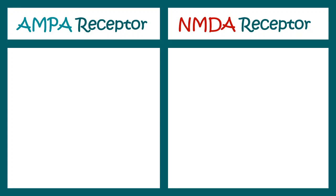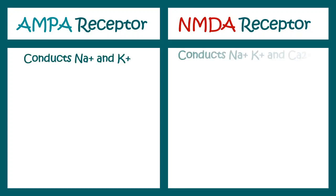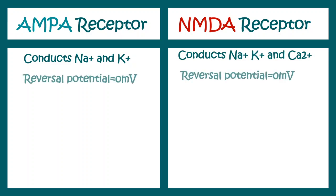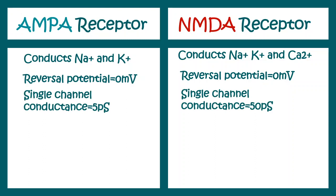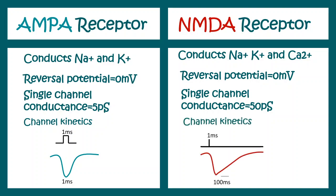Comparing AMPA and NMDA receptors: AMPA conducts sodium and potassium, whereas NMDA also conducts calcium. Both have a reversal potential of 0 millivolts. NMDA receptor conductance is about 50 picosiemens, which is 10 times higher than AMPA receptors. Their current kinetics also differ — AMPA shows very fast opening and closing kinetics, whereas NMDA shows sustained current kinetics.